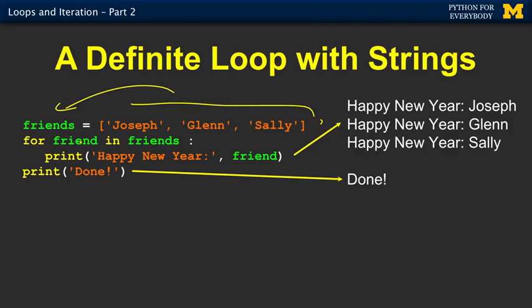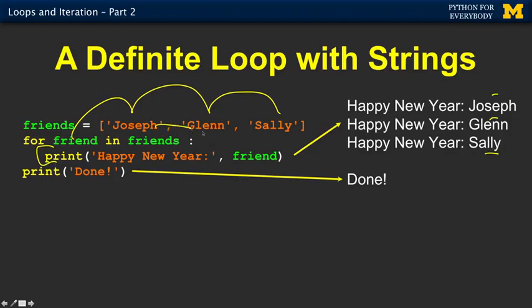And then I have this iteration variable friend that's going to go through each of the strings in friends. So that means friend is going to go once, Joseph. The next time it's going to run the loop again with Glenn, and the third time it's going to run the loop with Sally. And so it says happy new year Joseph, happy new year Glenn, happy new year Sally. So you know that this code is going to run three times, and friend is going to take on Joseph, Glenn, and Sally in successive iterations through the loop.